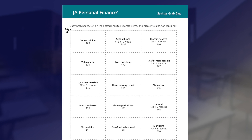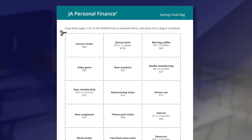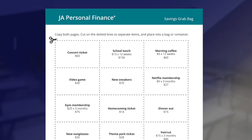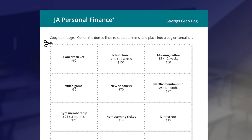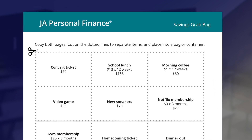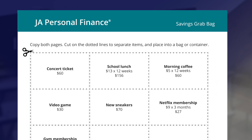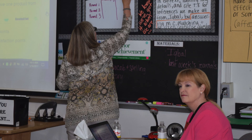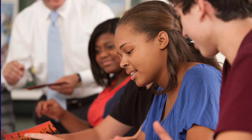Before class, prepare your savings grab bag for the main activity by cutting the sheets along the dotted lines and putting them in a bag or container. Also, discuss with the teacher if you will incorporate the sprint activity or will show a video. The choice will depend on your students' needs and ability level.